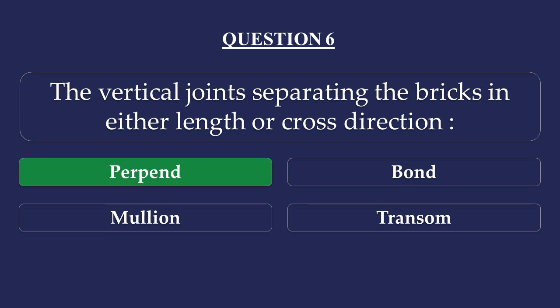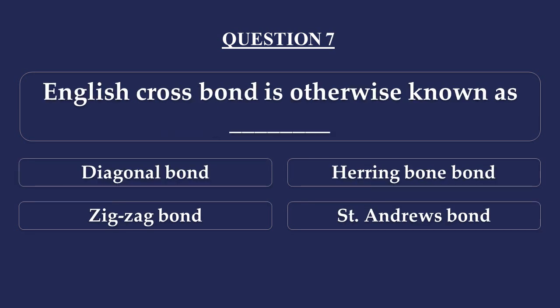Question number 7. English cross bond is otherwise known as: Option A - Diagonal bond, Option B - Herringbone bond, Option C - Zigzag bond, Option D - St. Andrews bond. The answer is Option D: St. Andrews bond. English cross bond is also known as St. Andrews bond.